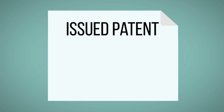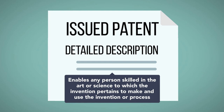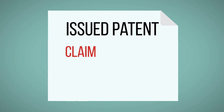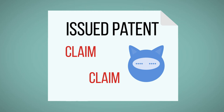The patent also includes several other numbered figures. In addition, the patent includes a written description detailing the invention in clear, full, concise, and exact terms to enable any person skilled in the art or science to which the invention pertains to make and use the invention or process. Finally, the patent concludes with one or more claims that particularly point out and claim the subject matter that the inventor regards as the invention.